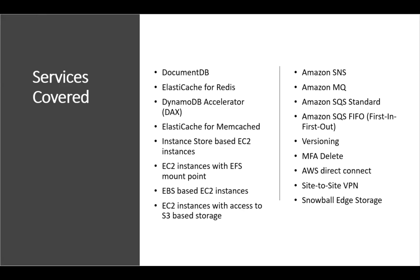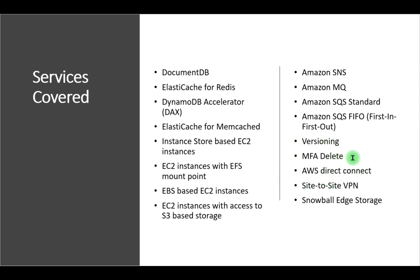The services covered in this video include DocumentDB, ElastiCache for Redis, DAX (DynamoDB Accelerator), and ElastiCache for Memcached. On the compute side we'll cover instance store based EC2 instances, EC2 with EFS mount point, EBS based EC2 instances, and EC2 with access to S3 storage. We'll also cover Amazon SNS, Amazon MQ, SQS Standard and FIFO, and S3 versioning with MFA Delete.